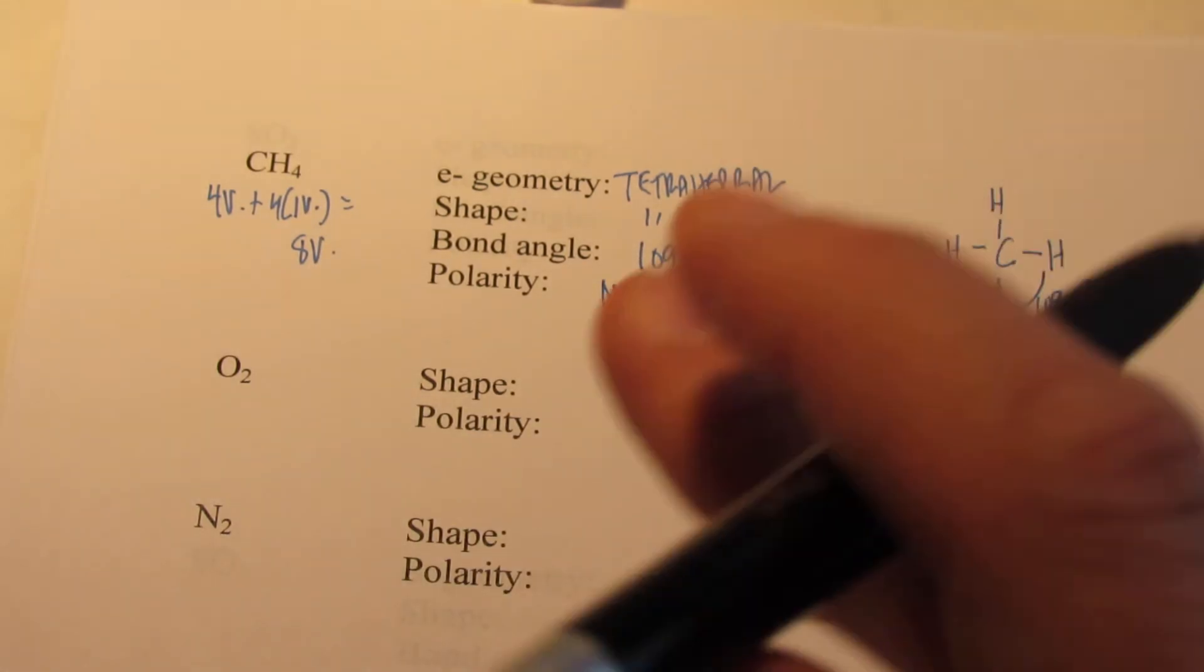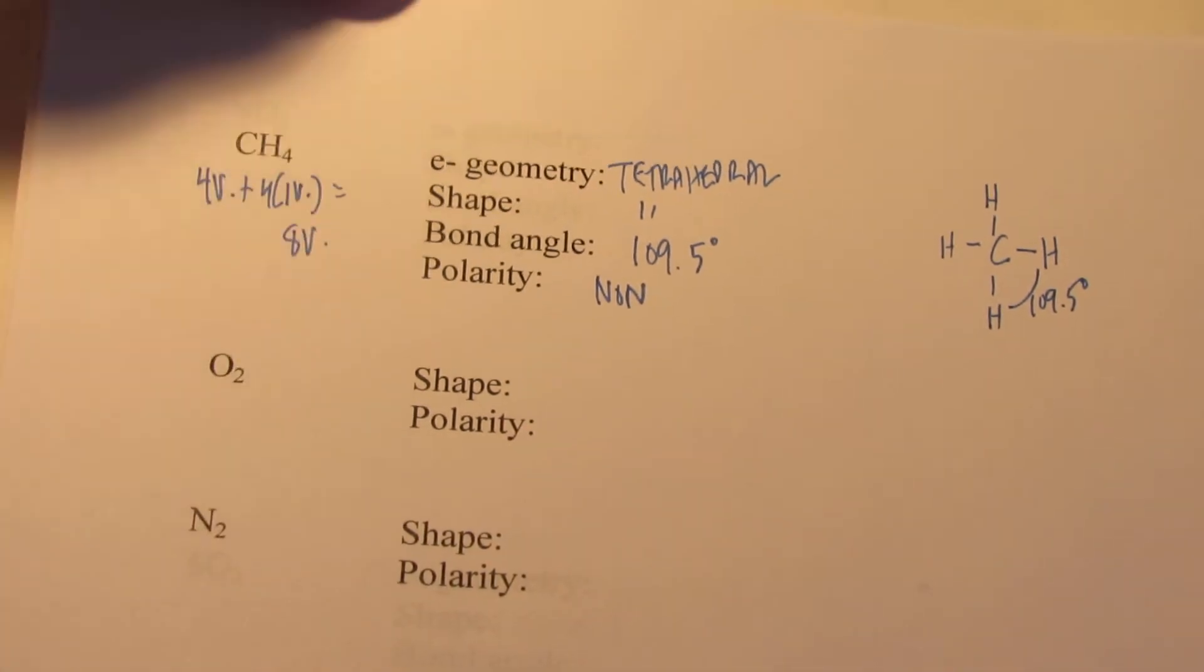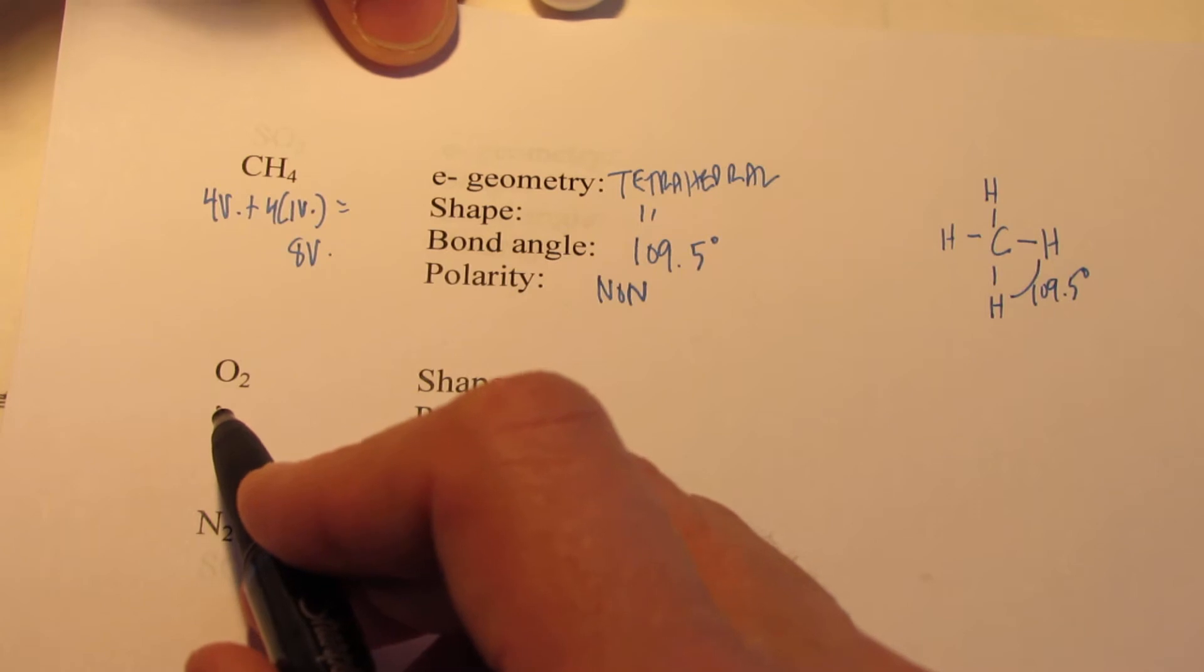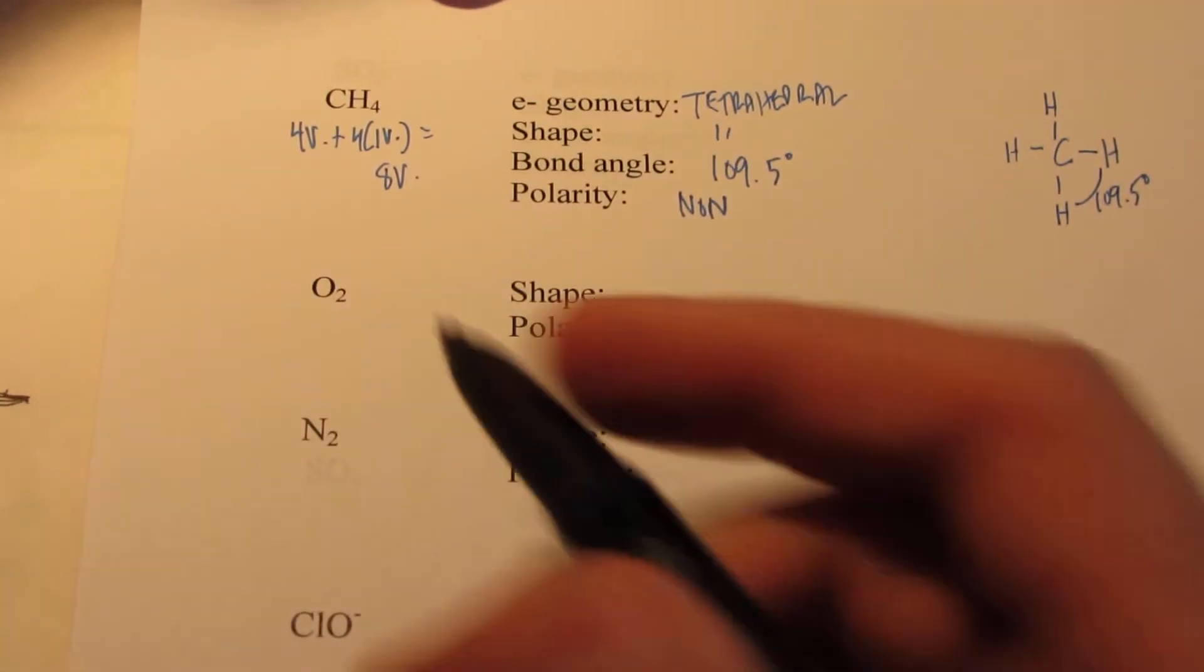Okay, as promised, we are back with our discussion on Lewis structures, and we are going to continue now with doing the Lewis structure for a diatomic molecule, or element, in this case, oxygen gas.